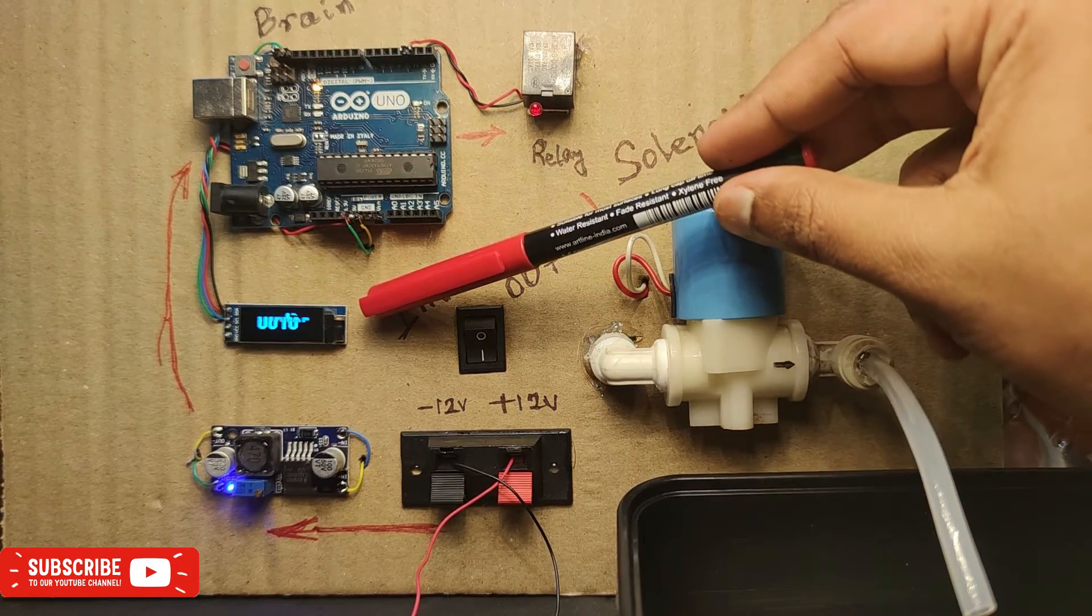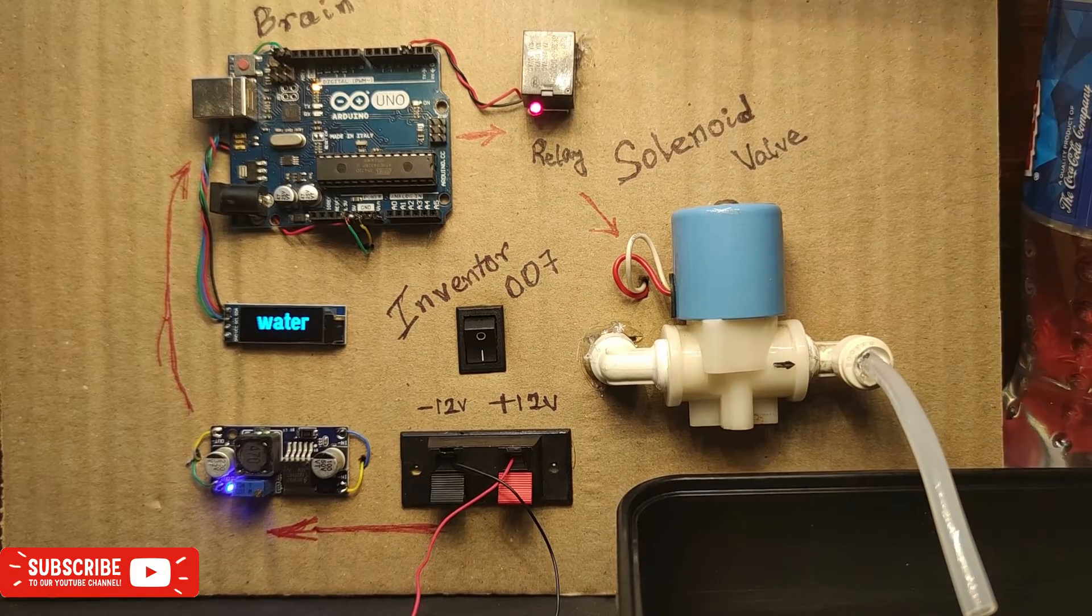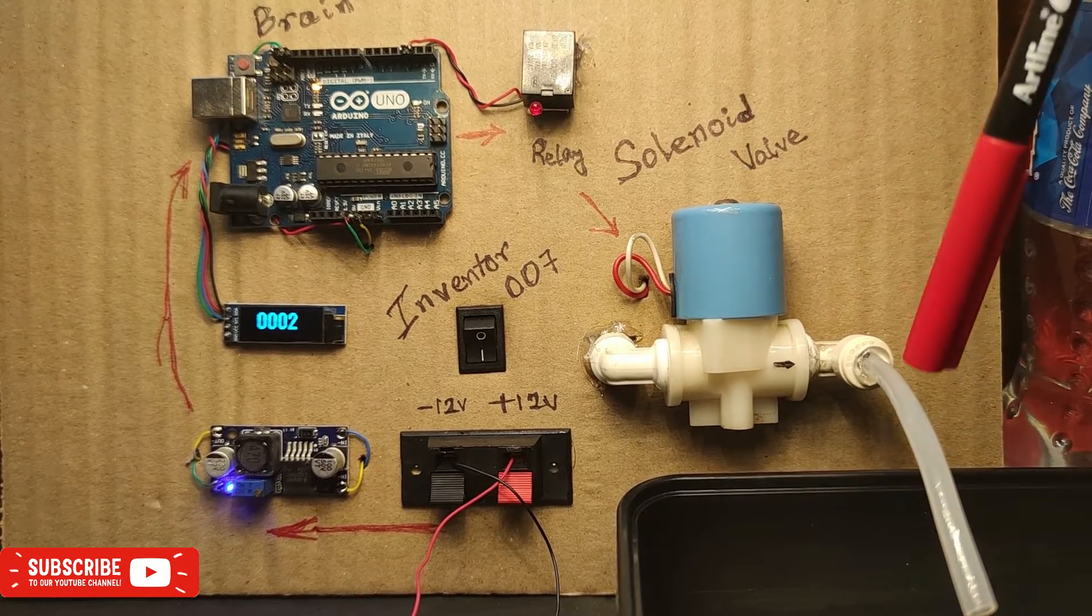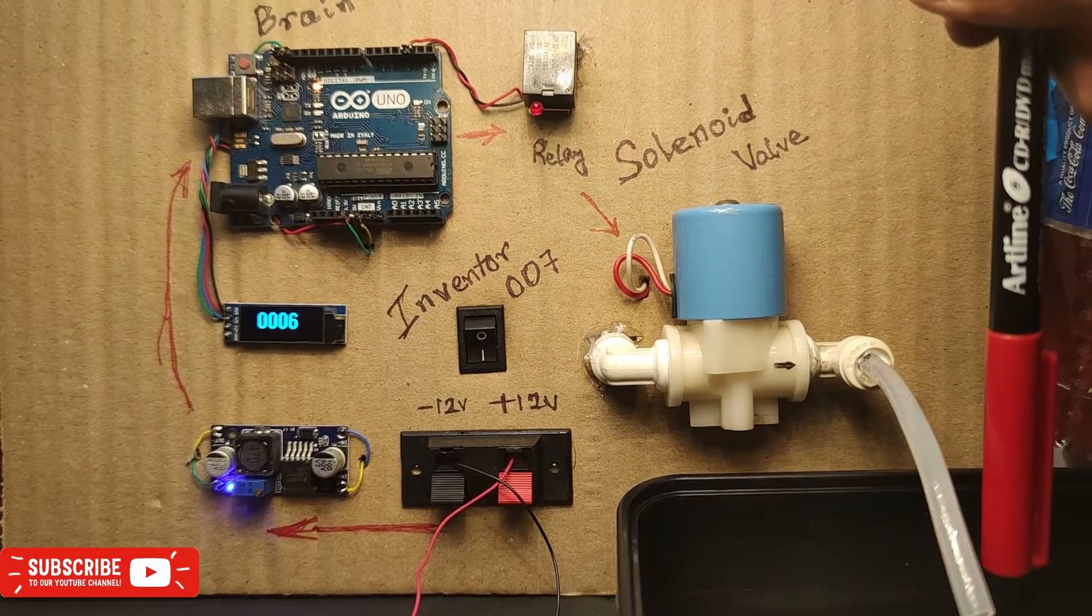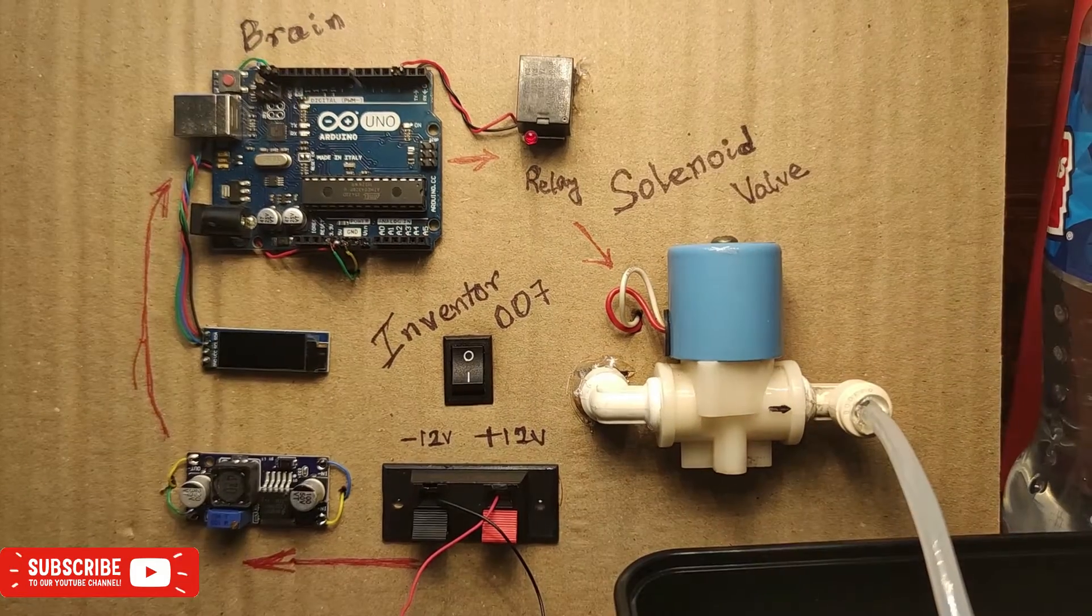So here you can see the relay has been activated and the solenoid valve has also been activated. I haven't connected the water, so it is not showing the water flow. Let me cut down the pipe a little bit so that you can see the water flow.